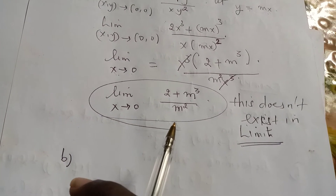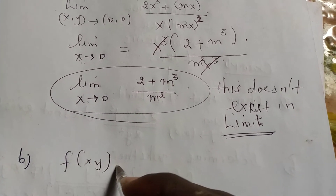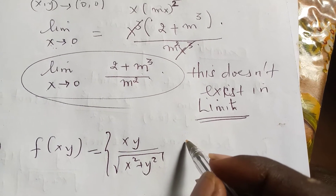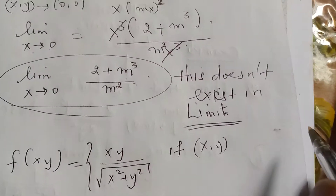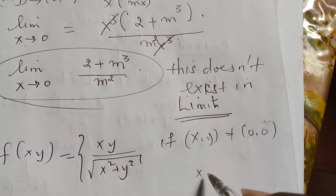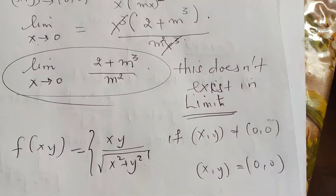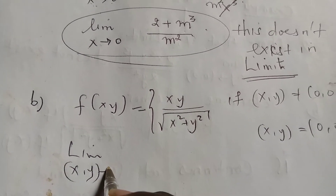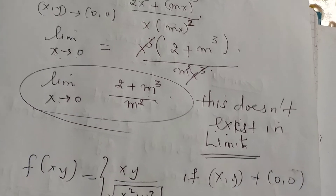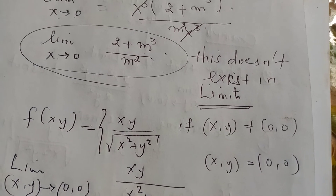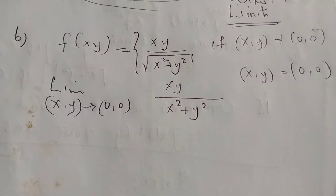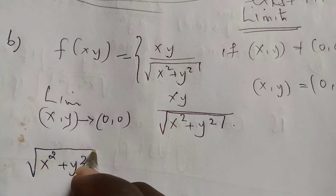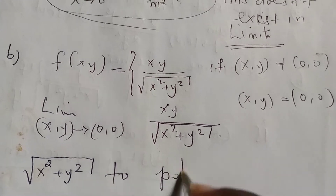For Part B, we need to determine whether f(x,y) = xy/√(x²+y²) for (x,y)≠(0,0), and 0 for (x,y)=(0,0), is continuous at (0,0). We evaluate the limit as (x,y)→(0,0) of xy/√(x²+y²) by converting to polar coordinates.